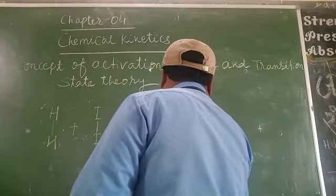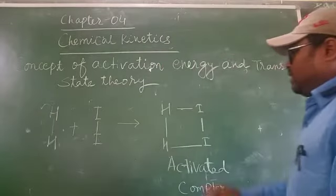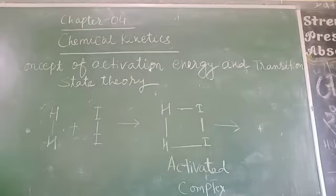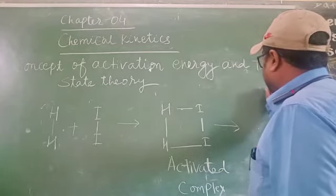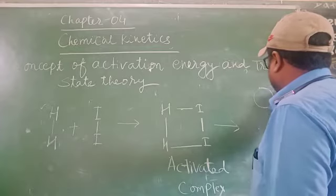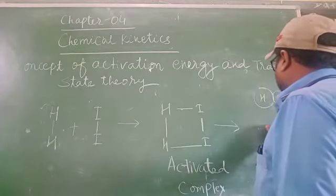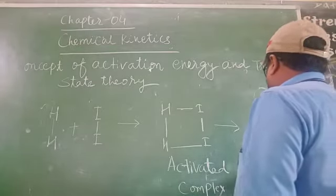Activated complex. Now they will react together. And finally it will convert into product. Product means H2 plus I2, HI. That will be H, I. HI. It will be the product.